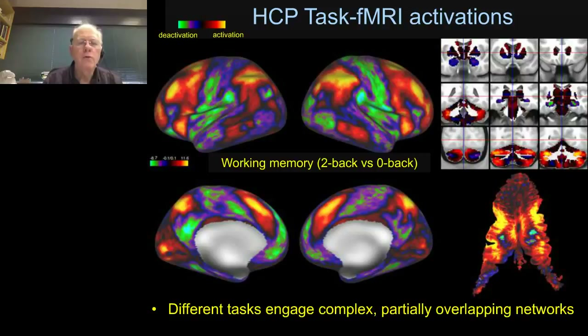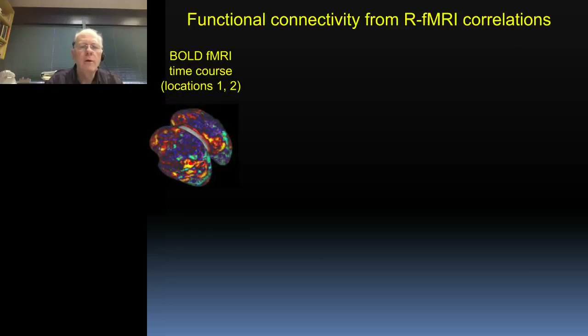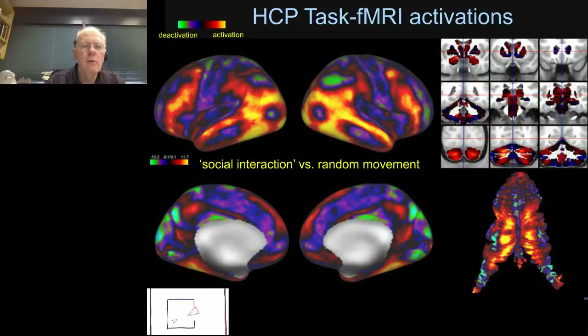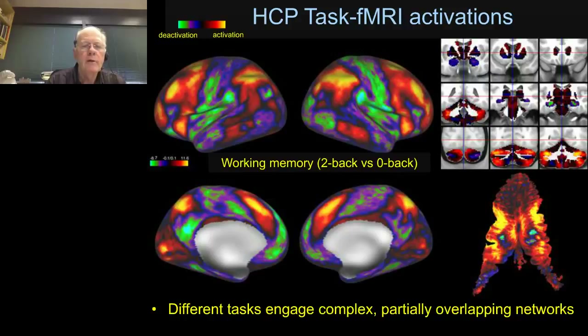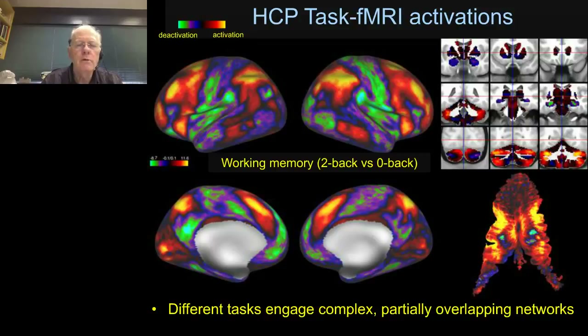Resting state functional MRI relies on the fact that when a subject is lying in the scanner doing no task at all — just staring at a screen with eyes open — the brain is still very active in a pattern that fluctuates in space and time. The time course of the resting state functional MRI signal shows that signals in some locations are strongly correlated with one another, while other pairs of locations are anti-correlated and others are more or less uncorrelated.